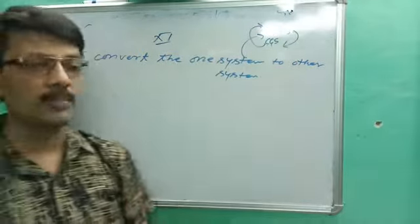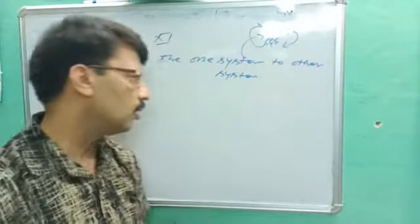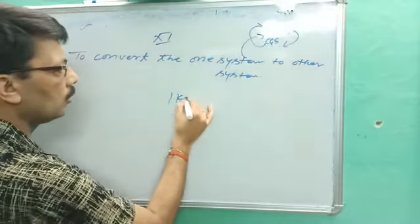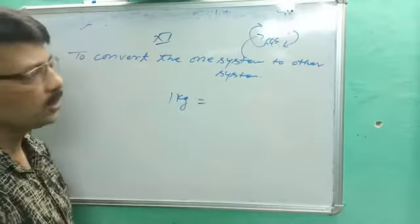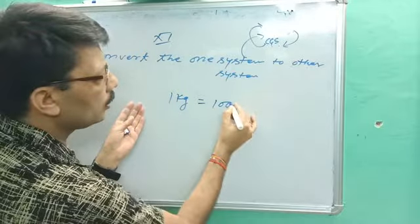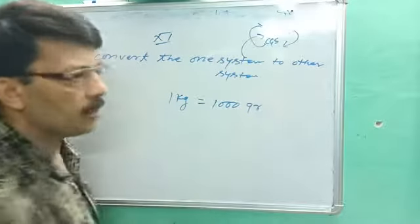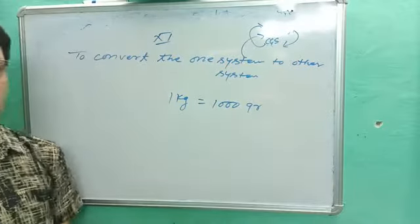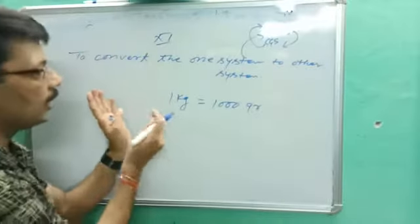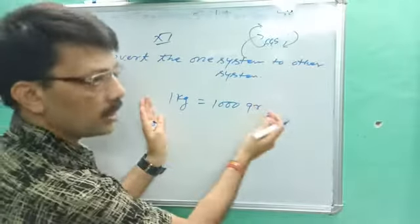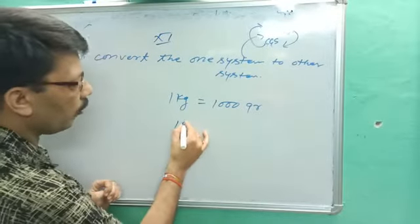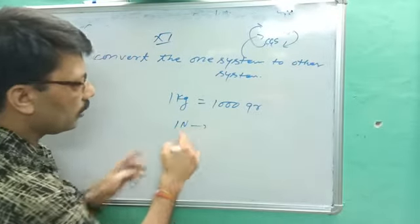For example, if you are given 1 kg and asked to convert into grams, you directly know 1 kg equals 1000 grams — that is a direct MKS to CGS conversion. But if I ask you to convert 1 newton into the CGS system, that is a different situation.